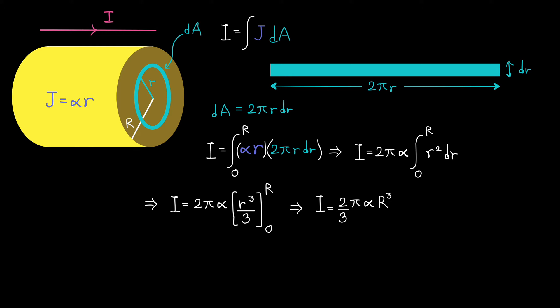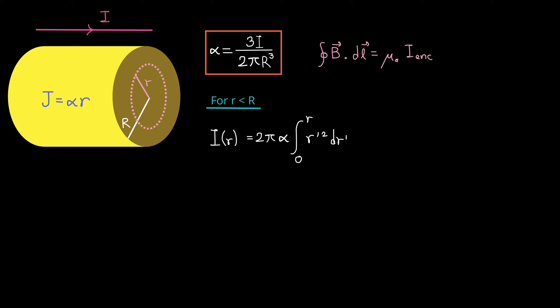And we get the result I equals 2 over 3 pi times alpha times capital R cubed. Now let's isolate alpha and express it in terms of capital I and capital R. After some algebra, we get alpha equals 3 times I divided by 2 pi R cubed.